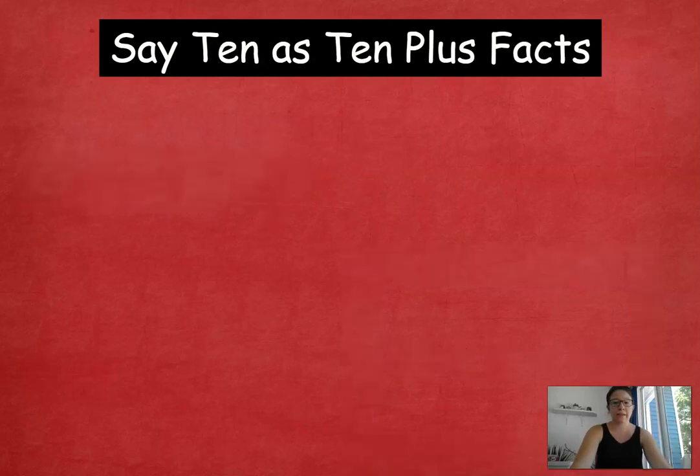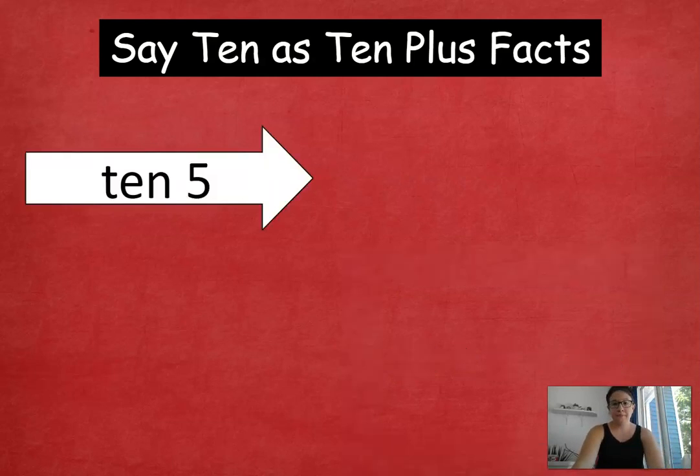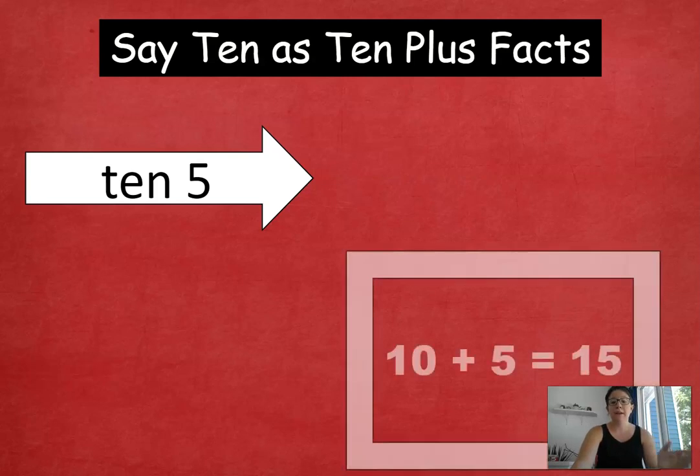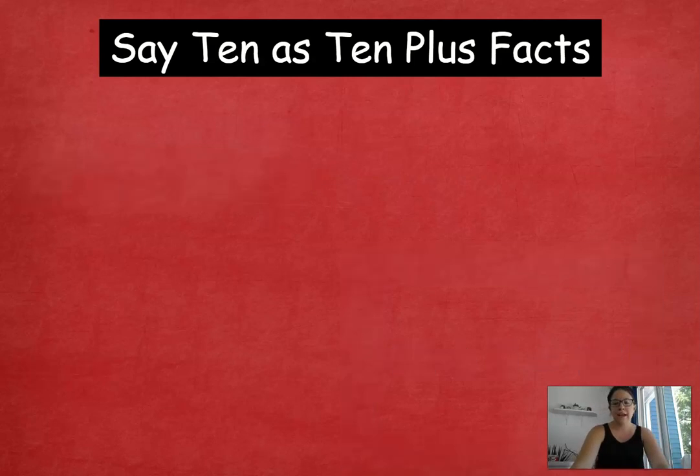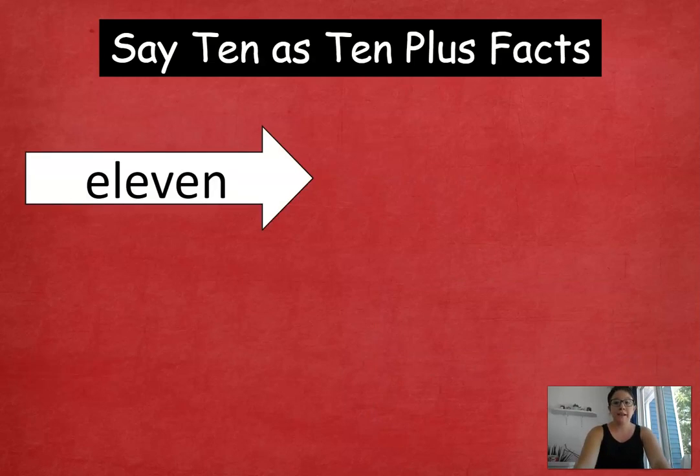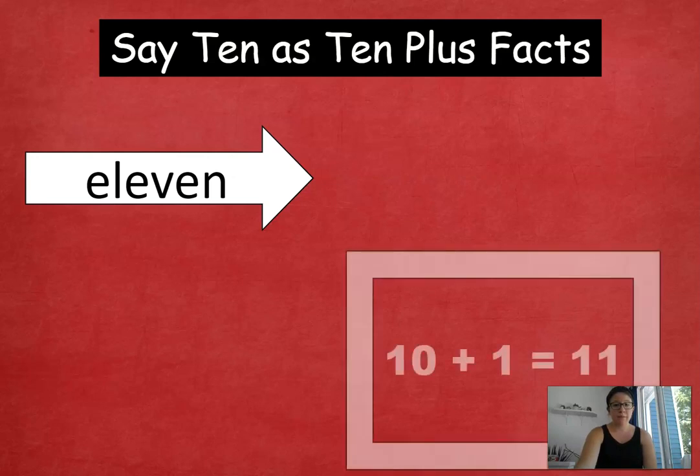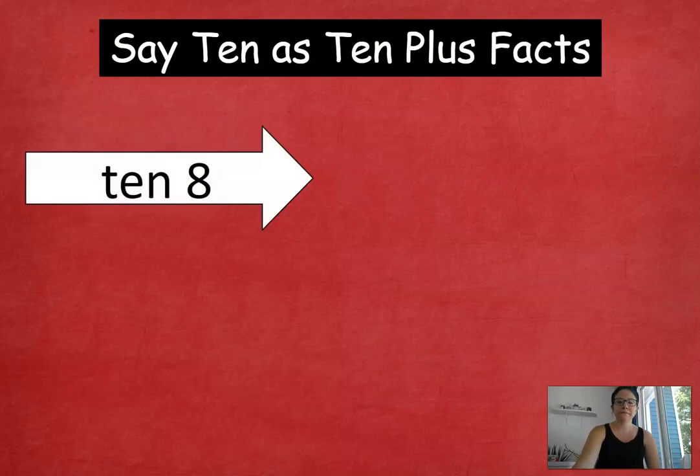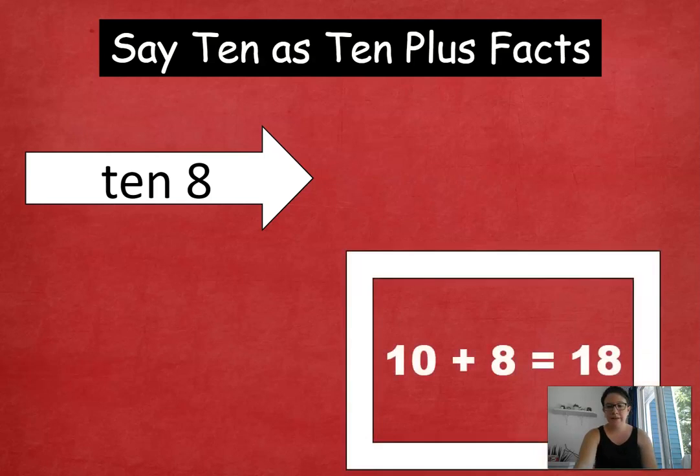10, 5. 10 plus 5 equals 15. Excellent work. 11. Don't get tricked. Think about the number 11. Start with your 10 plus. 10 plus 1 equals 11. 10, 8. 10 plus 8 equals 18. You're awesome.